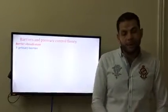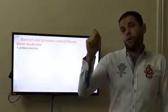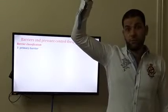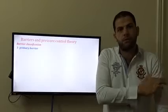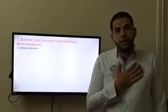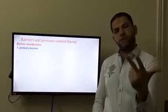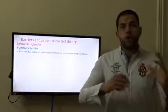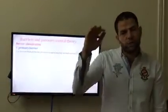Now, barrier classification and barrier tests. There is a primary barrier. Just remember: if you are going upstairs with an umbrella, the first barrier to prevent the sun from reaching you is the umbrella — that is the primary barrier. If the umbrella fails, you have the second barrier, which is your clothes. If your clothes are torn, your body is protected by your skin, which is the last one. The primary barrier is the barrier that performs pressure control during normal operations. Many references assign the primary barrier to the hydrostatic head or mud density.